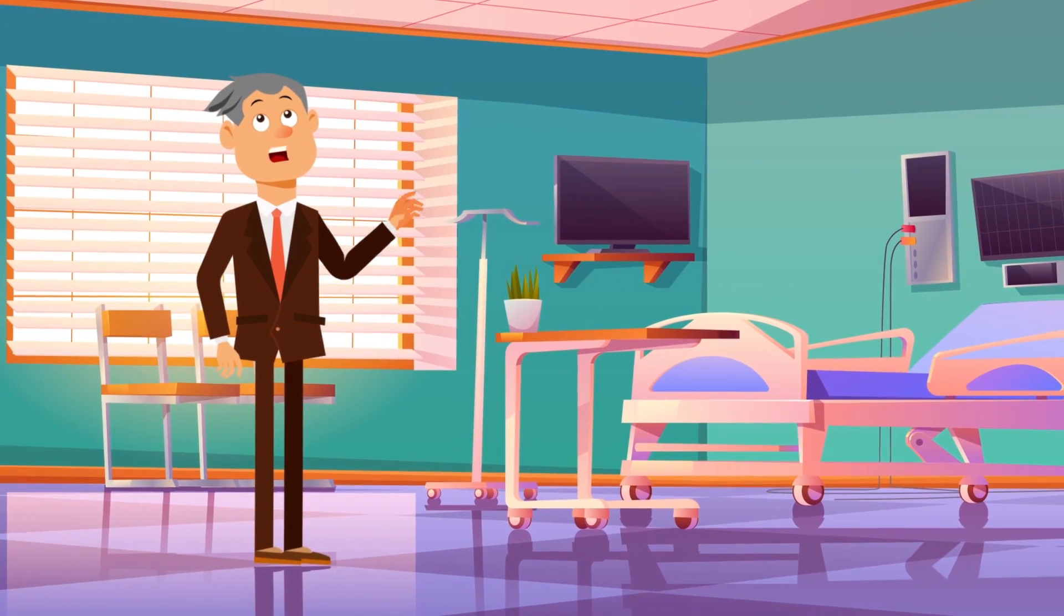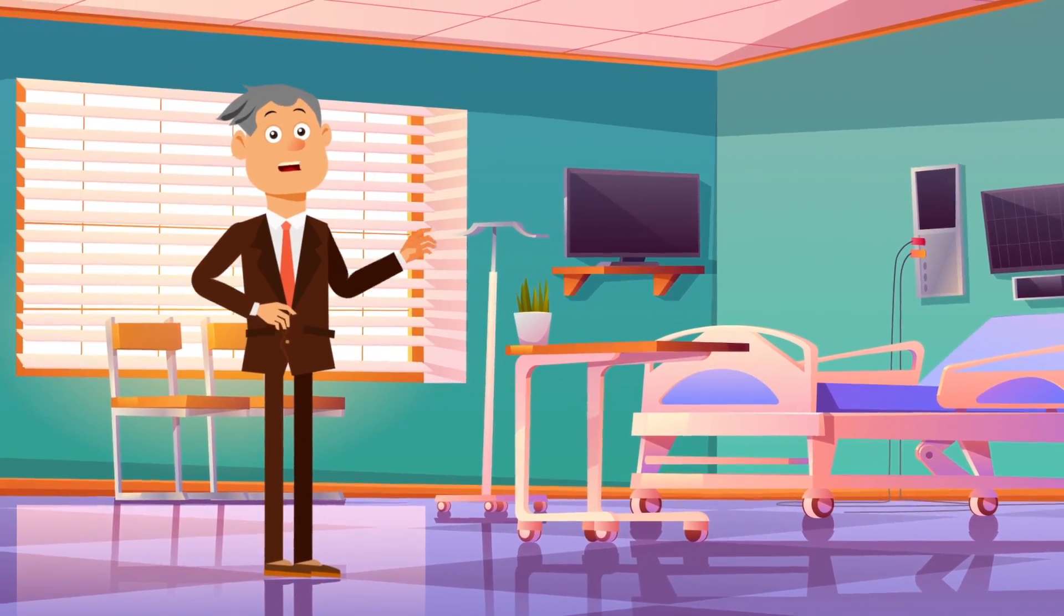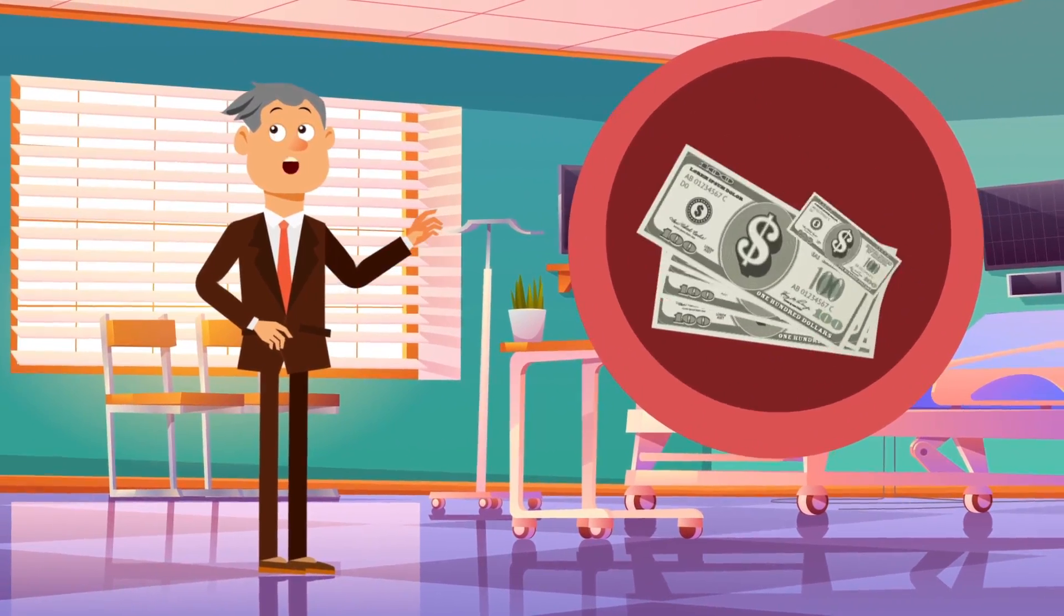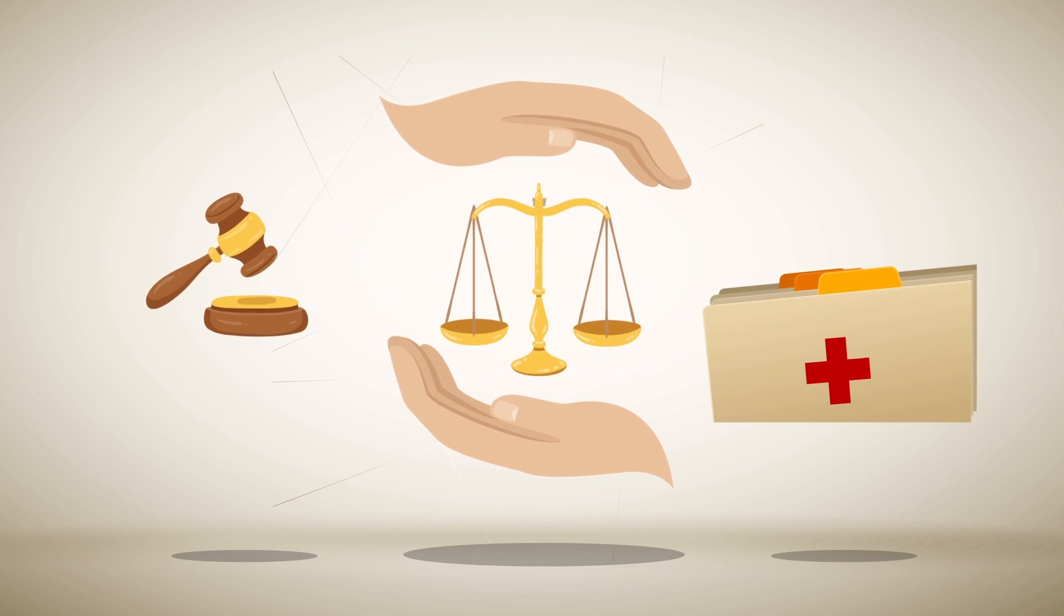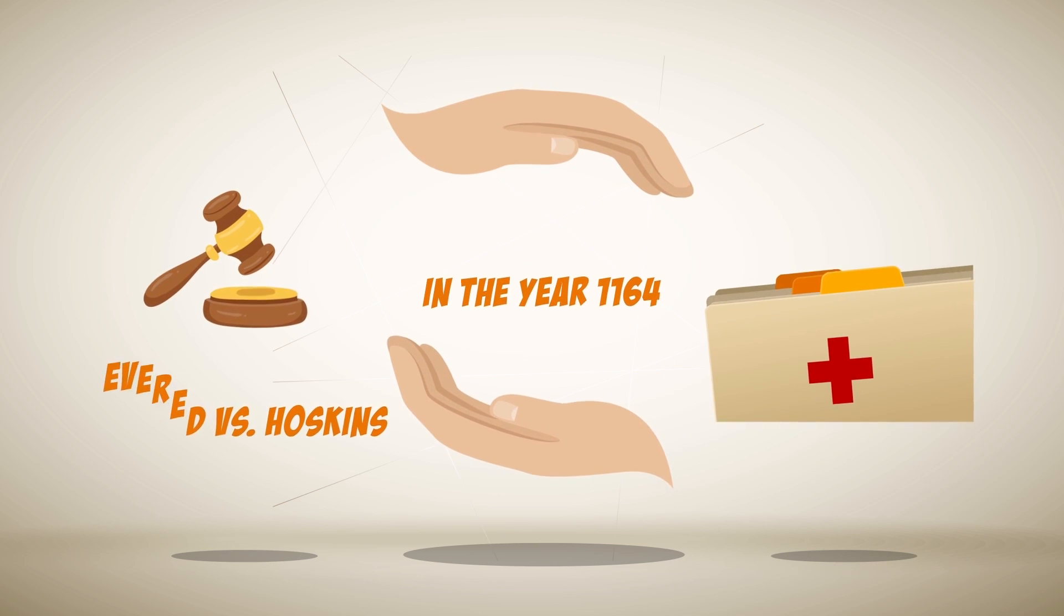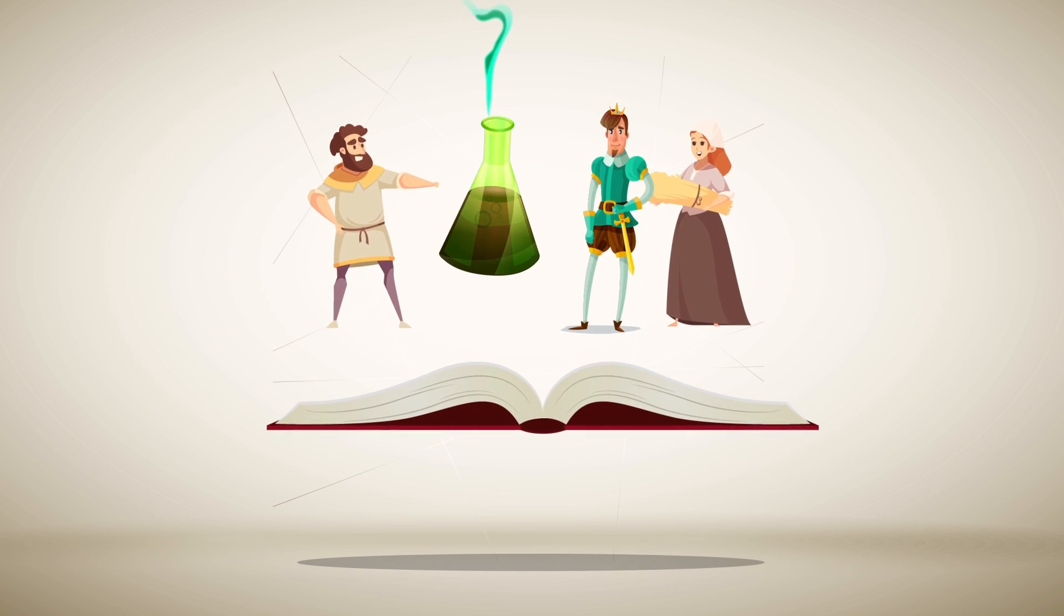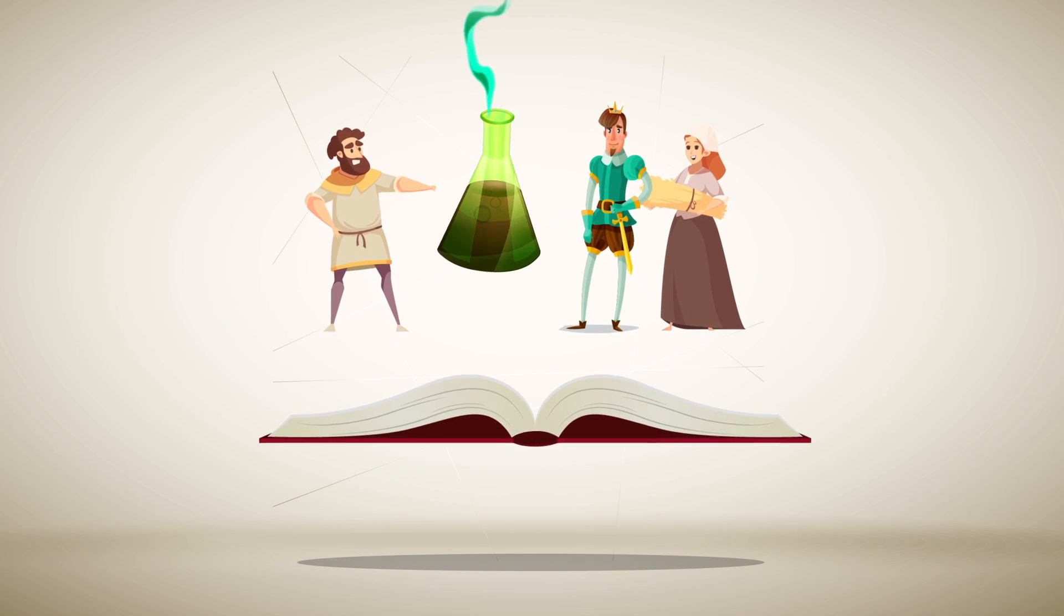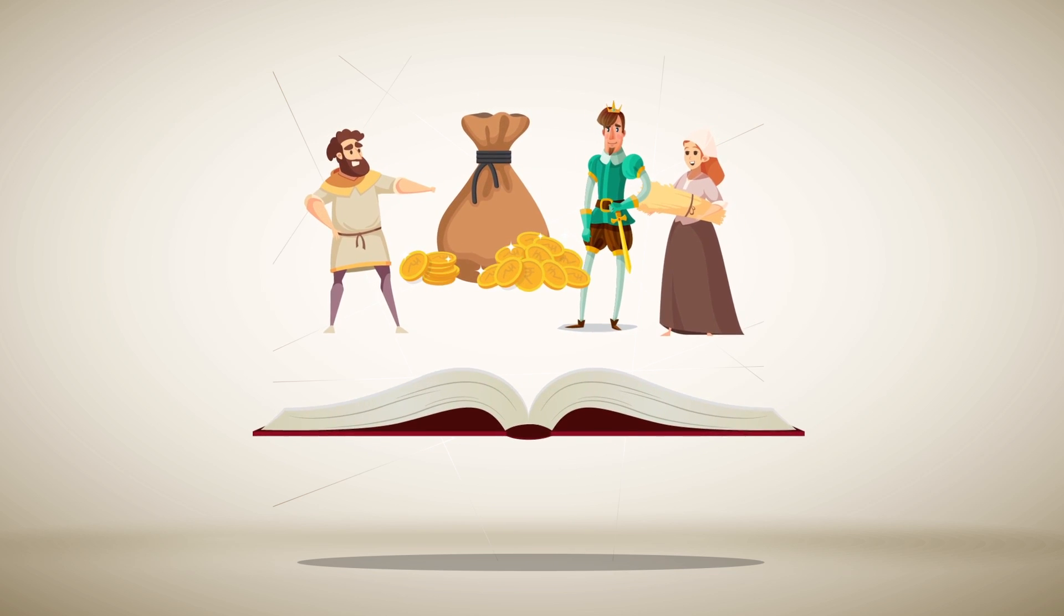Speaking of medical malpractice, oh boy, do we have some crazy stories to tell you. And also some instances of crazy amounts of money being awarded to the patient. Let's start off with the first ever case of a medical malpractice lawsuit. This occurred in the year 1164 in England, known as Everett v. Hoskins, where a servant and his master were awarded damages because their physician practiced, and we quote, unwholesome medicine.